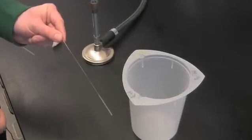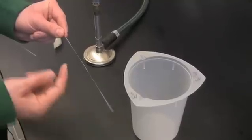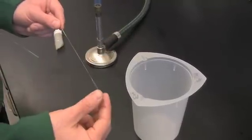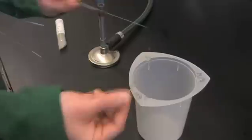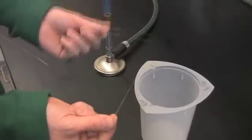So you want to take the tube that you just pulled, and because when you break it this glass could go flying, you want to do it over some kind of container. You want to just snap it, and now you've got two capillary tubes.